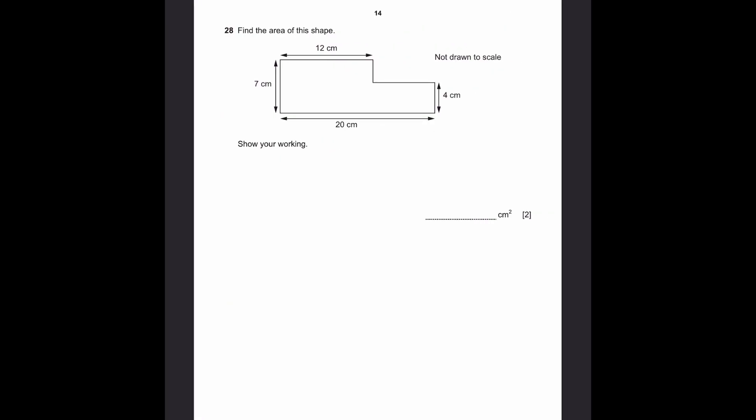Question 28. Find the area of this shape. Show your working. Since there's 20 and there's 12 centimeters, this will be 8 centimeters over here. We can split this shape into 2, part A and part B. Part A area will be 12 into 7, which equals 84 centimeters squared. Part B's area is 8 into 4, which equals 32 centimeters squared. The area of a rectangle is equal to length into breadth. Over here, 12 is the length, 7 is the breadth. Over here, 8 is the length, 4 is the breadth. The total area will be A plus B, which equals 84 plus 32, which equals 116 centimeters squared.